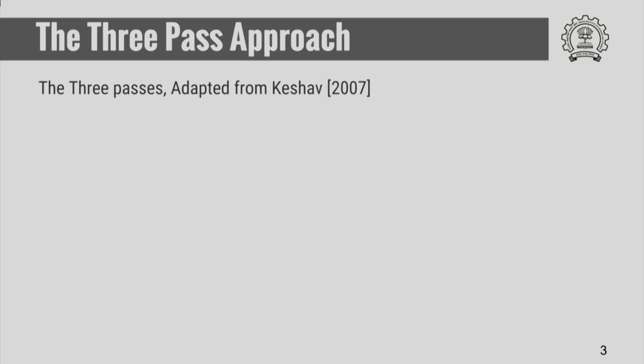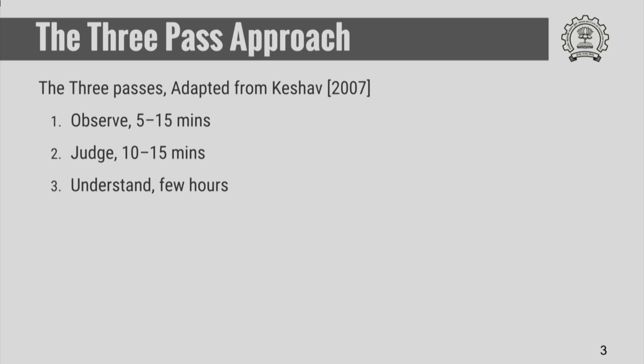We should probably read only some papers in detail. To quickly read a research paper, Professor Keshaw from University of Waterloo has proposed a method which is a three-pass method of examining a research article. The first pass he calls the observation pass, which would take 5 to 15 minutes for an expert, maybe 20 minutes to half an hour for a beginner. The second pass he calls the judgmental pass, which would take 15 to 20 minutes for an expert or maybe half an hour for a beginner. The third pass is a detailed reading of a journal article, which can take a few hours to a few days.